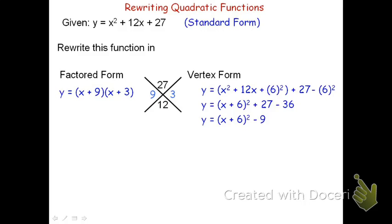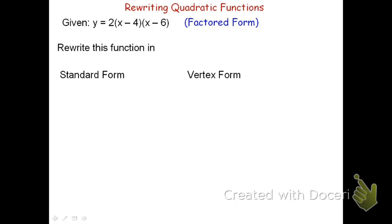For the next example, we're going to take something that is in factored form: y equals 2 times quantity x minus 4 times quantity x minus 6. We're going to start by finding the standard form, because in order to go from factored form to vertex form, you first have to find the standard form — you'll use that as one of the steps. I could either distribute the 2 into quantity x minus 4 to get 2x minus 8 and then multiply by x minus 6, or I can first multiply x minus 4 times x minus 6 and then distribute the 2 afterward. I'm going to use that second method.